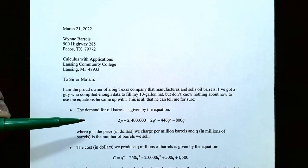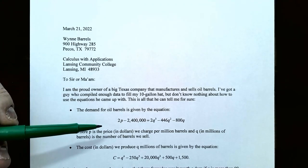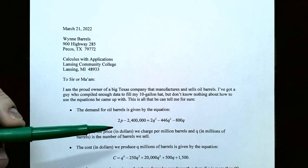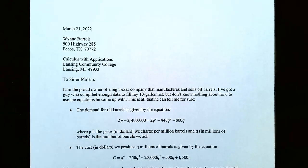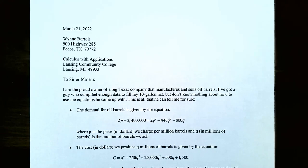The demand for oil barrels is given by the equation: 2P minus 2,400,000 equals 2Q cubed, subtract 446Q squared, subtract 800Q, where P is the price in dollars per million barrels of oil, and Q is in millions of barrels — that's the number of barrels that they sell.